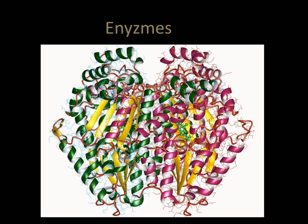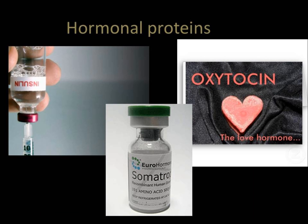Enzymes are proteins that facilitate biochemical reactions. They are often referred to as catalysts because they speed up chemical reactions. Examples include the enzymes lactase and pepsin. Lactase breaks down the sugar found in milk. Pepsin is a digestive enzyme that works in the stomach to break down proteins in food.